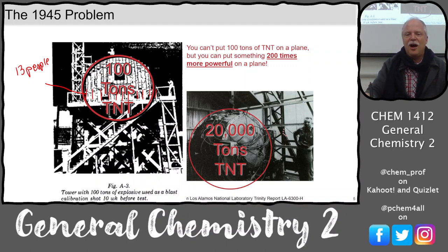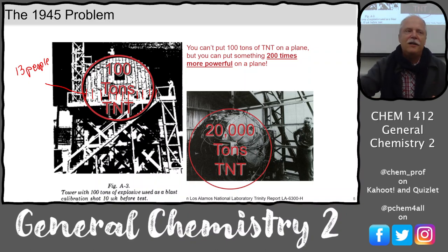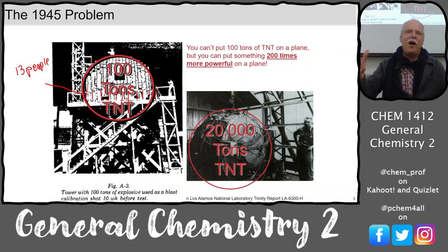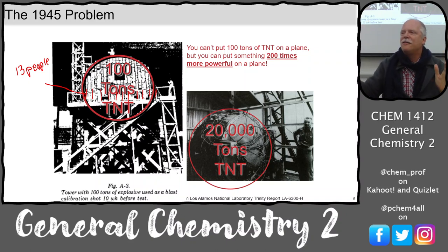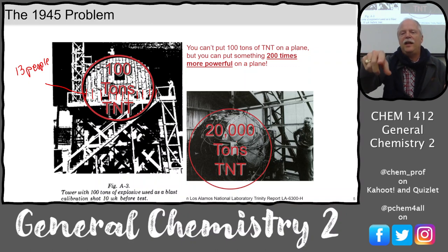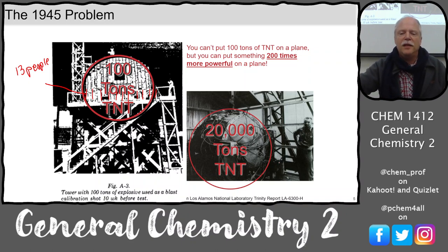They put something 200 times more powerful on a plane. This is the size of the Trinity shot — here's a person standing next to it — equivalent to 20,000 tons of TNT explosive power. When they say an 800-pound bomb, they mean the explosive power equivalent to that weight in TNT — the bomb doesn't actually weigh that. The Trinity device was a 20-kiloton device — 20,000 tons of TNT equivalent. They blew that up, then made a couple of bombs that helped end the war.